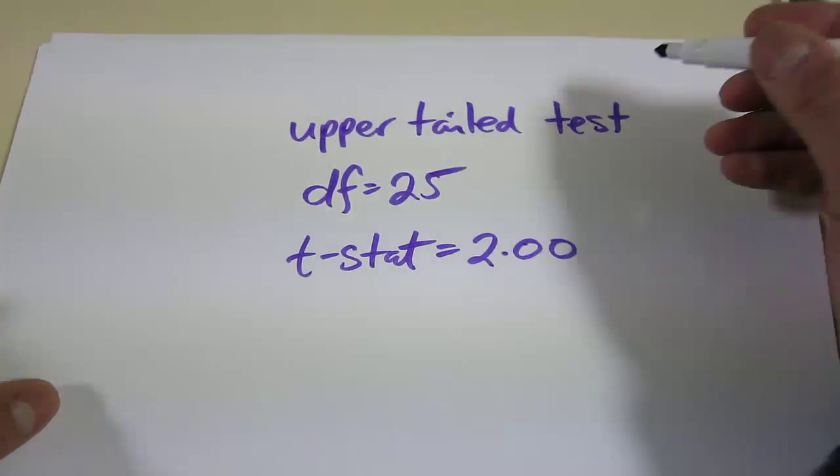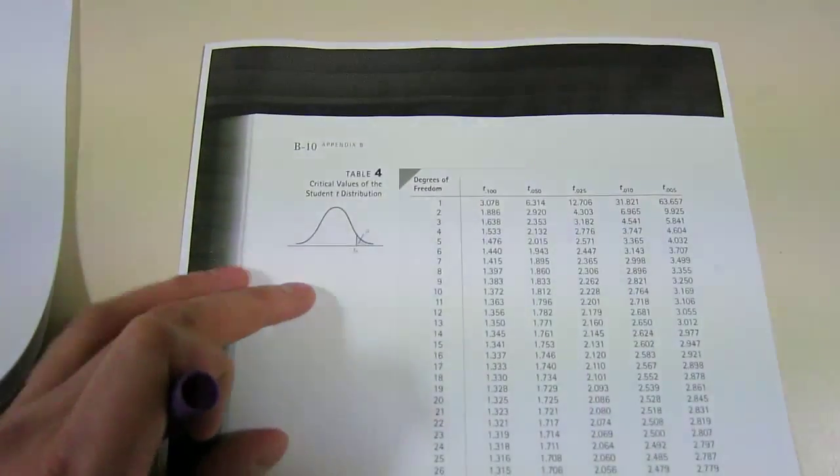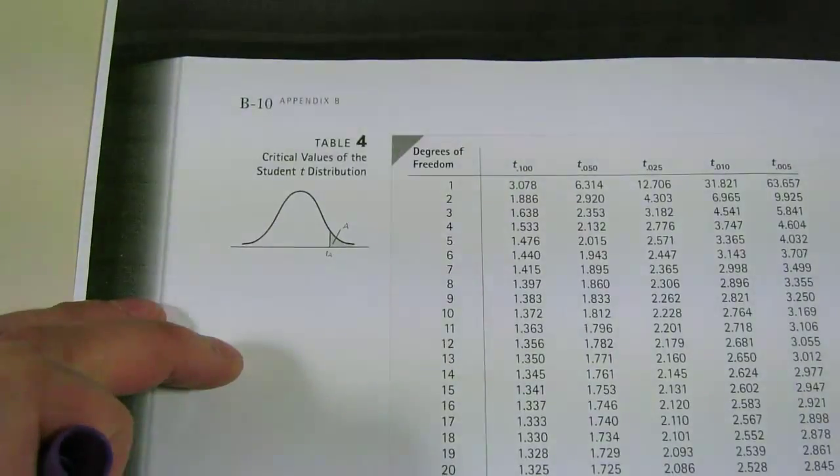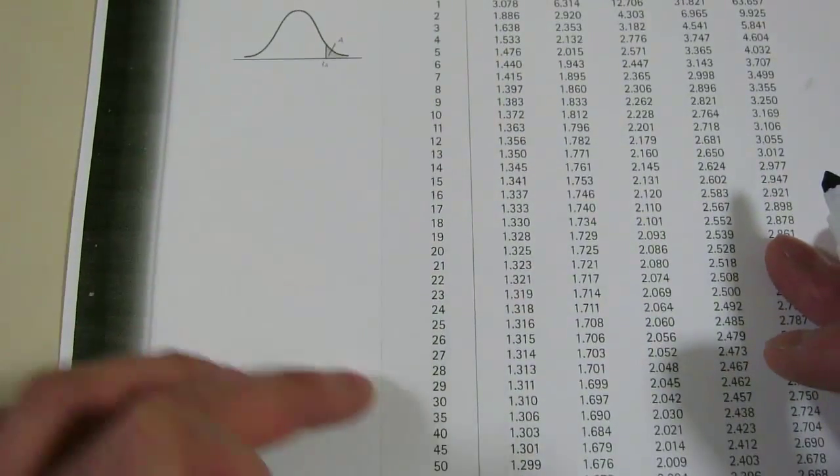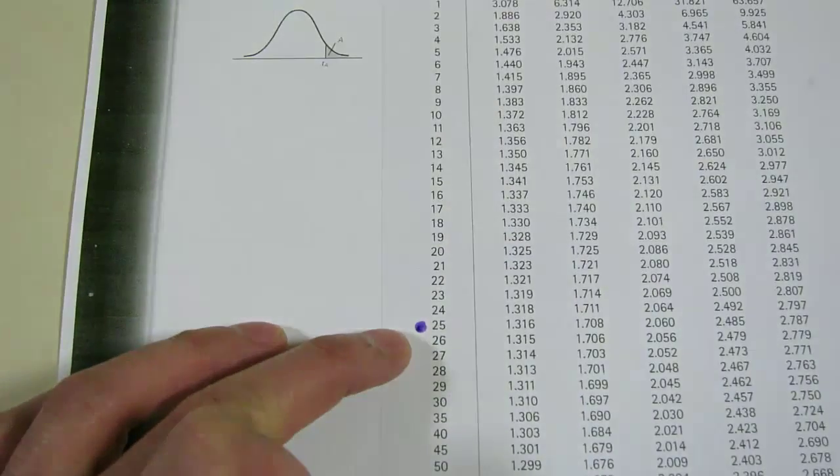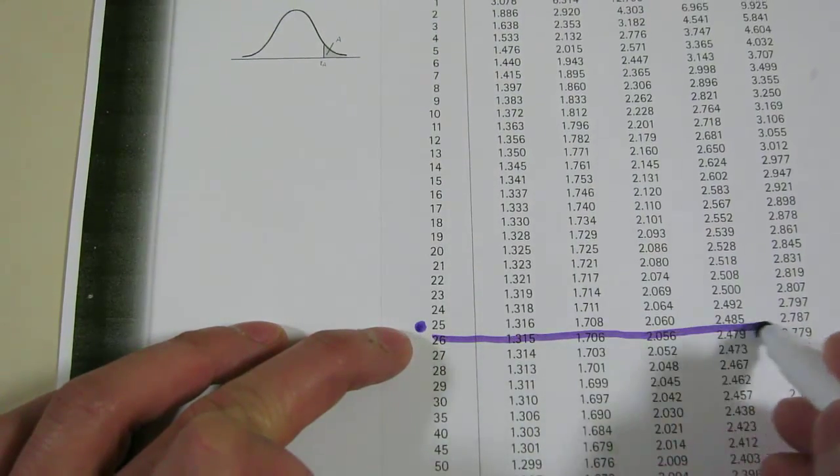The easiest example is when it's an upper-tailed test, because if we look at our t-tables, it relates to the upper-tailed probabilities. The first thing we have to do is look at our degrees of freedom. We found it there, 25. So it's that row there.